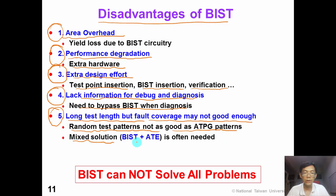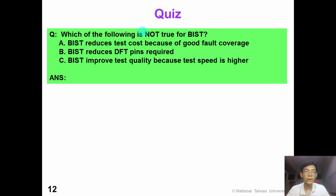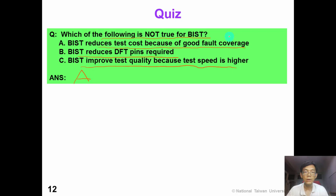So a mixed solution that performs both BIST and ATE is often used in practice. In summary, BIST can solve many problems, but it cannot solve all the problems in testing. Now we have a short quiz: which of the following is not true for BIST? A: BIST requires test code because of good fault coverage. B: BIST reduces DFT pin requirement. C: BIST improves test quality because the test speed is higher than ATE. The answer is A — BIST patterns are usually poorer in quality than traditional ATPG patterns.